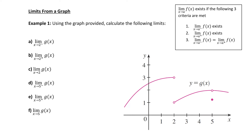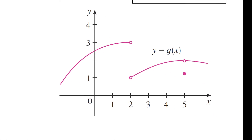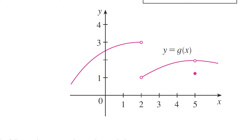Let's find some limits from a graph. Example 1 says: using the graph provided, calculate the following limits. I see a graph of a piecewise function g(x). I can see that it's discontinuous at a couple points — at x=2 and x=5 — so let's calculate the limits at those two x values.